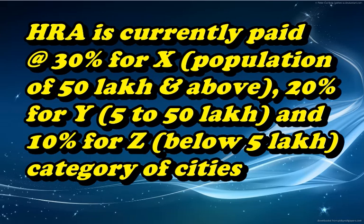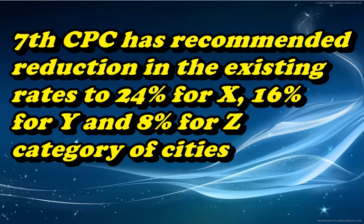X cities means a population of 50 lakhs and above, Y cities means 5 to 50 lakhs, and Z cities means below 5 lakhs.